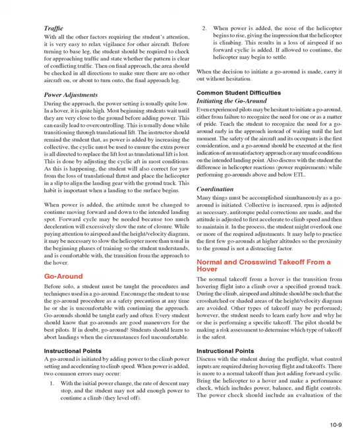Coordination during a go-around: many things must be accomplished simultaneously. Collective is increased, RPM is adjusted as necessary, anti-torque pedal corrections are made, and the attitude is adjusted to first accelerate to climb speed and then to maintain it. In the process, the student might overlook one or more of the required adjustments. It may help to practice the first few go-arounds at higher altitudes so the proximity to the ground is not a distracting factor.